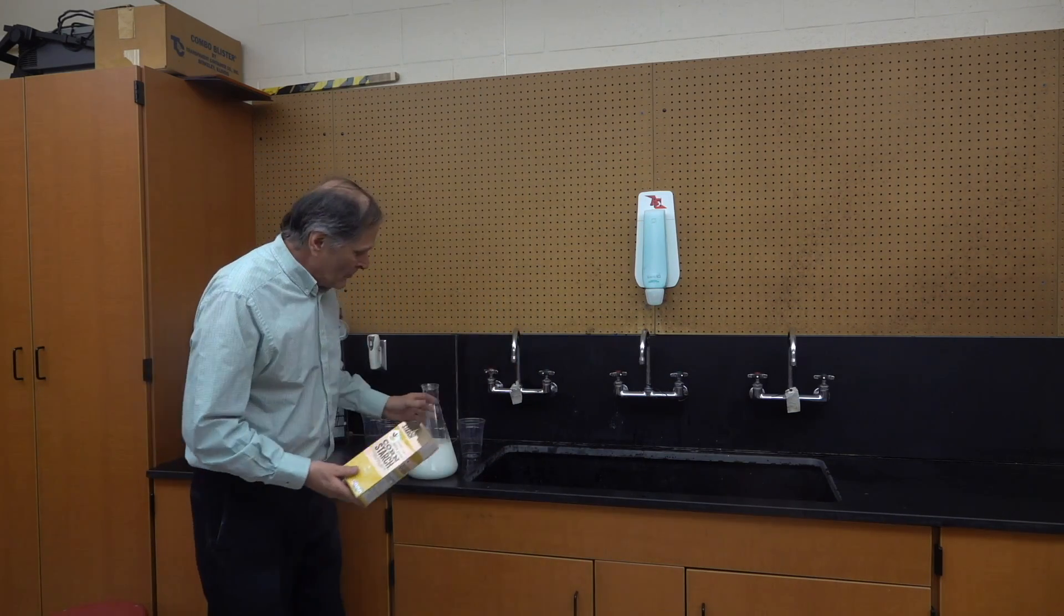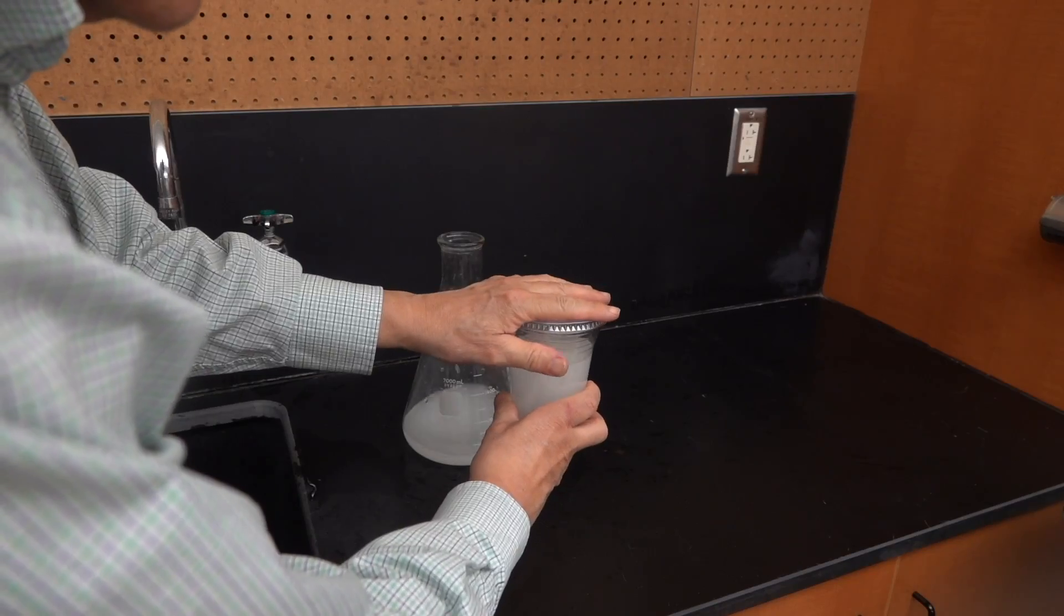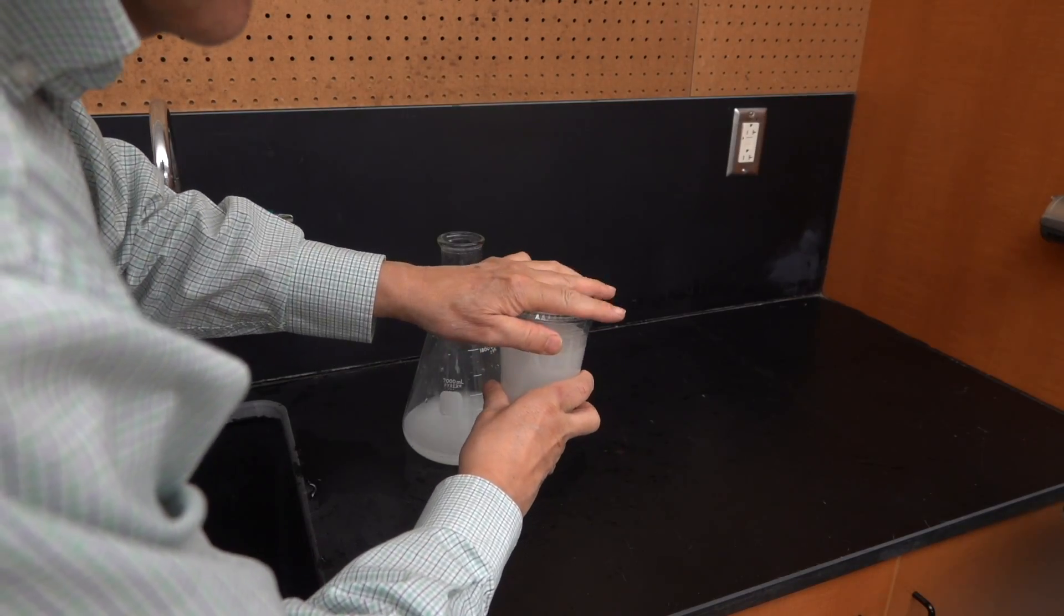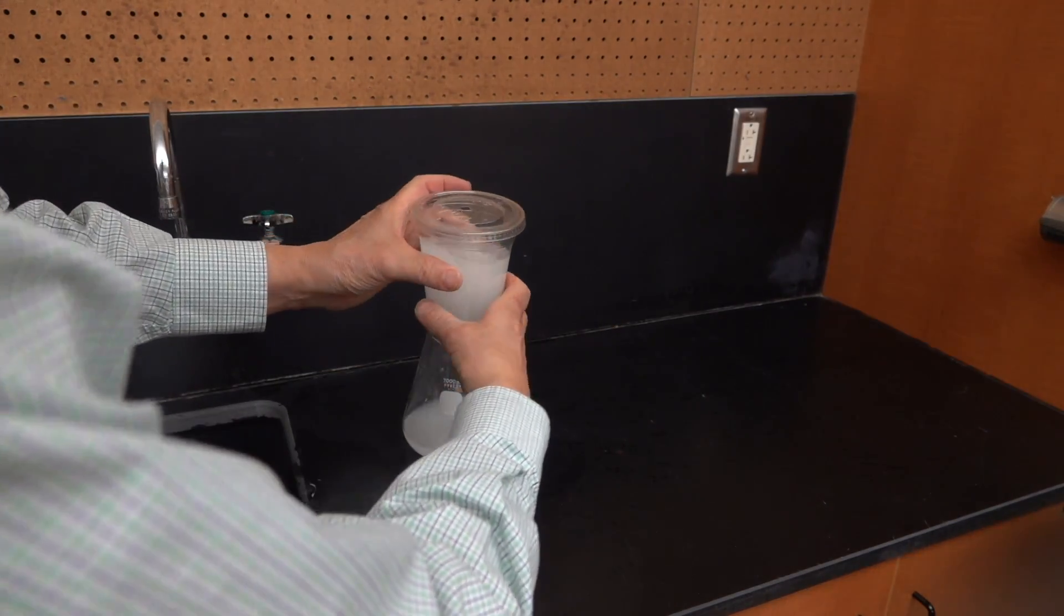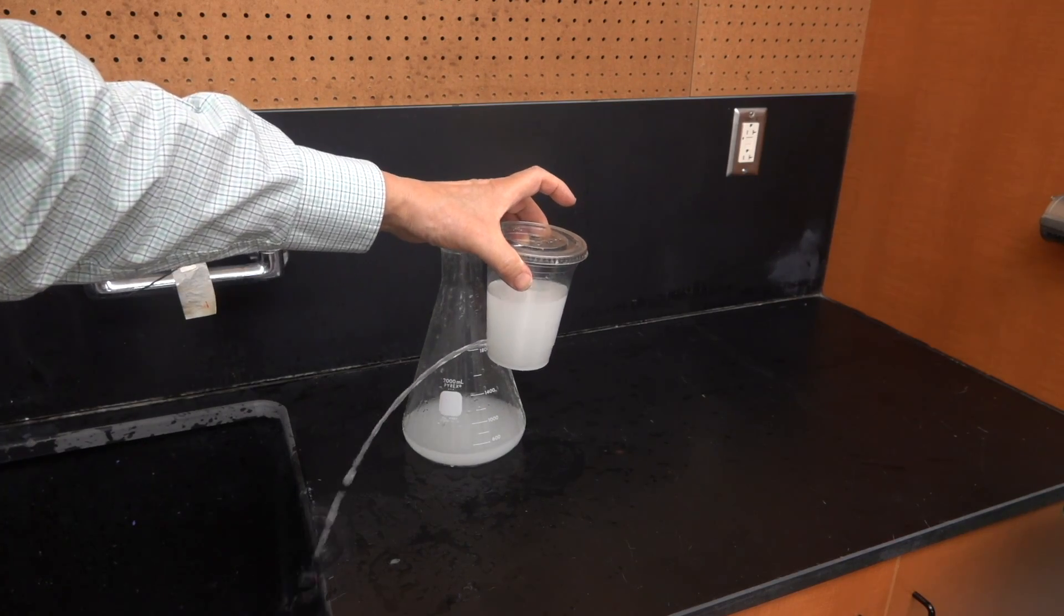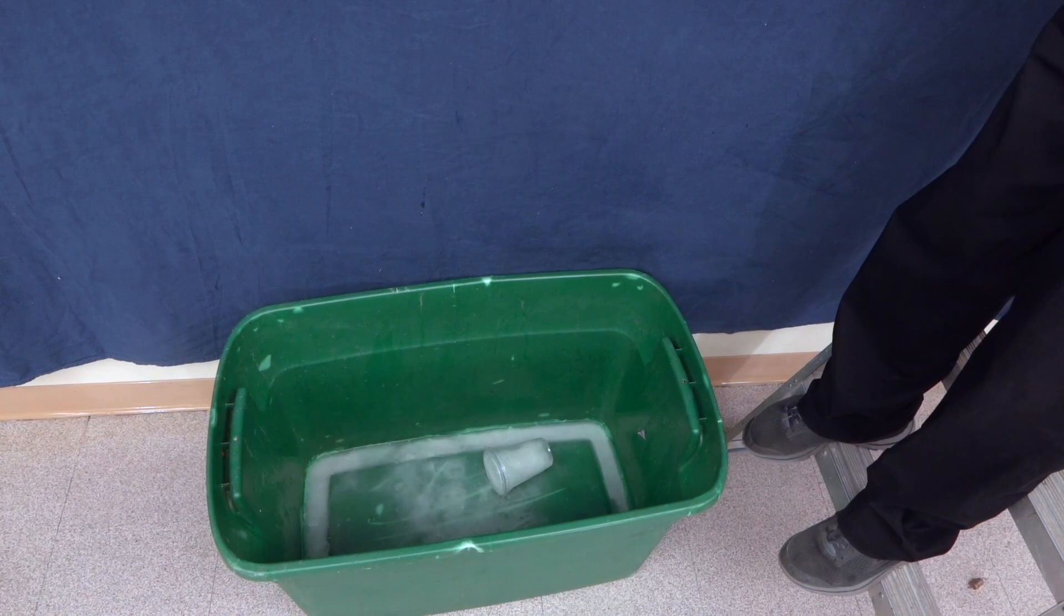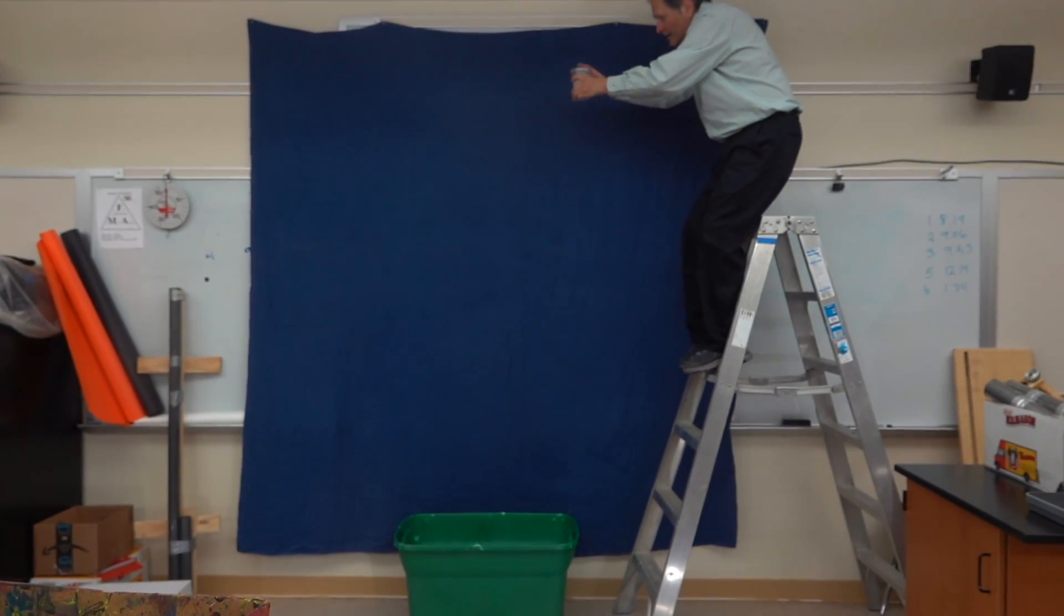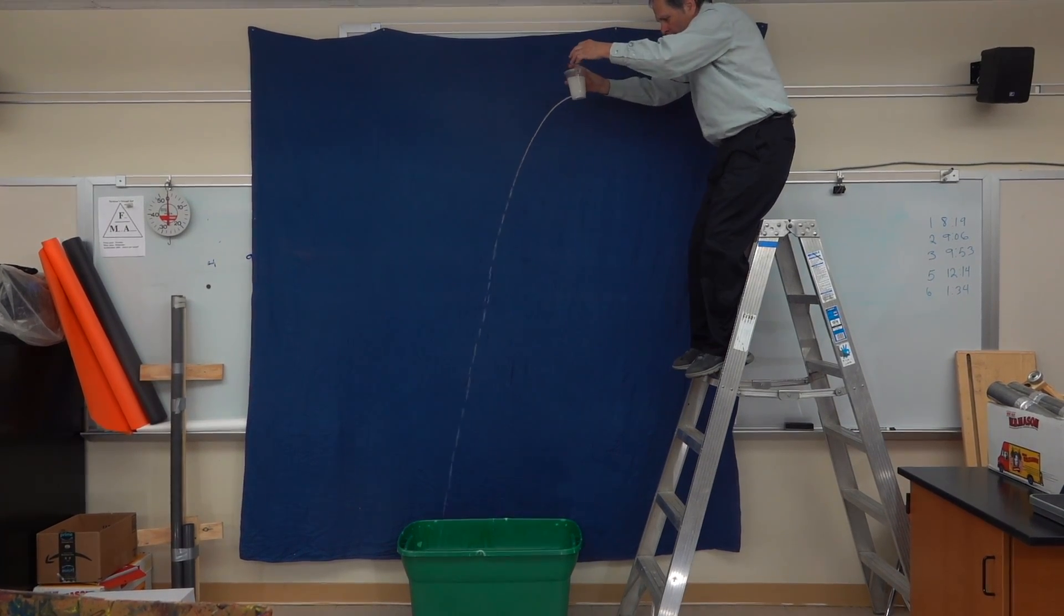Now when we do this demonstration, I like to add some corn starch to some water. It's going to make it easier to see. It's also a good idea if you're doing this inside, put a lid on it with a hole in it. This will reduce the splash up when the cup lands. Release the stream and then simply drop it.